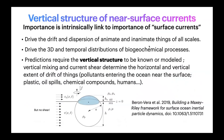The importance of how currents vary vertically near the air-sea interface is really related to the importance of surface currents themselves. They drive the drift and dispersion of animate and inanimate things of all scales. They drive not only the three-dimensional but also the temporal distribution of various biochemical processes. A prerequisite to predict the drift and distribution of all these components is to have accurate prediction of the vertical structure of surface currents. Vertical mixing and current shear determine the horizontal and vertical extent of the drift of pollutants, plastic, oil spills, chemical compounds, and even humans lost at sea.